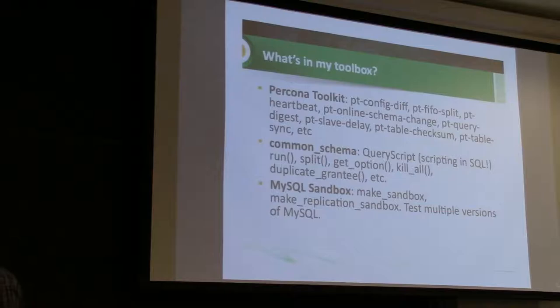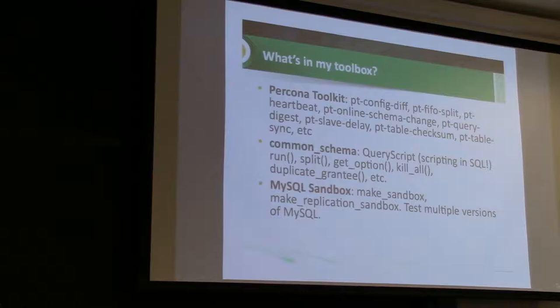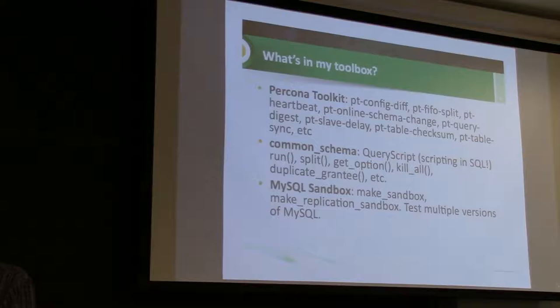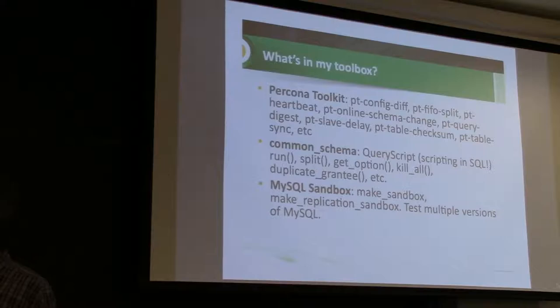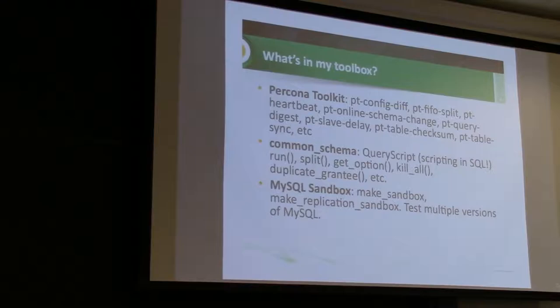Moving on to Common Schema, there's a lot of good stuff in this. There's QueryScript, which is basically a way to do scripting in SQL. I go on Stack Overflow sometimes and answer questions about MySQL, and often I'll see people wanting to do loops and things that you can't normally do in MySQL — they want to do it in the database rather than in Python, Perl, or Bash. Shlomi has done a really clever thing where you can actually do for loops in the database and do a lot of simple scripting things natively in SQL. QueryScript is really powerful, and the run and split functions are really powerful — I use those a lot.